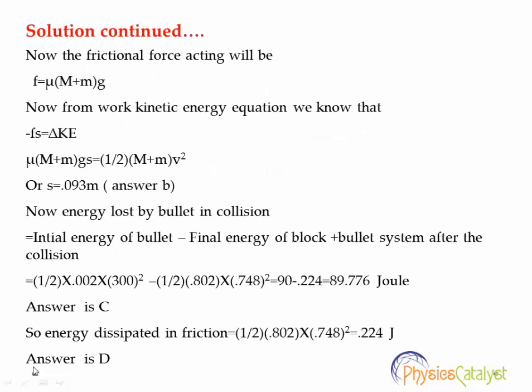After the bullet hits the block, the system starts moving and frictional forces oppose the motion. The frictional force acting on the system is μ(M + m)g. Using the work-energy theorem: μ(M + m)g × S = ½(M + m)V². Substituting the coefficient of friction, the combined mass, g, and V, we calculate S = 0.093 meters. This is answer B — the distance moved by the block-and-bullet system.